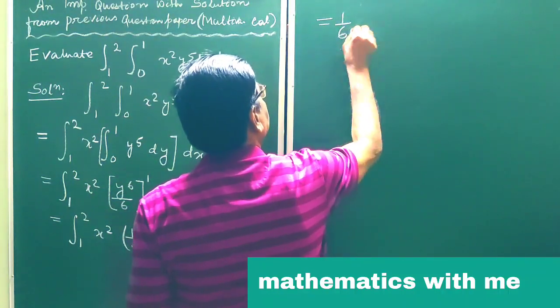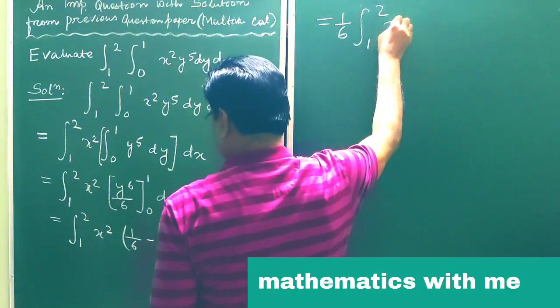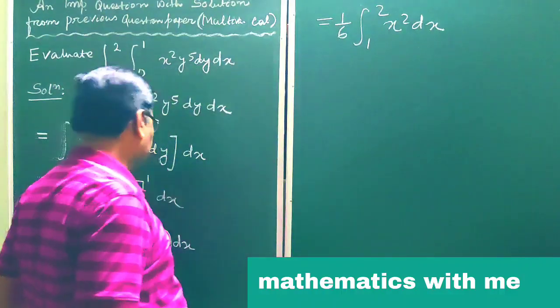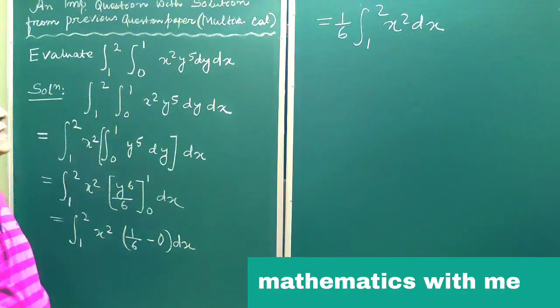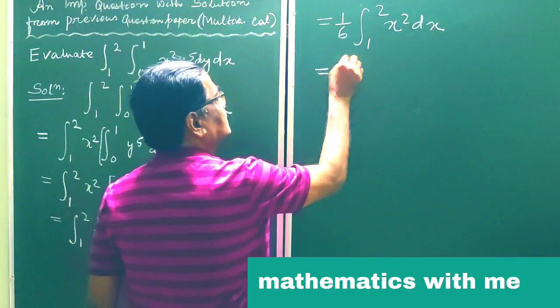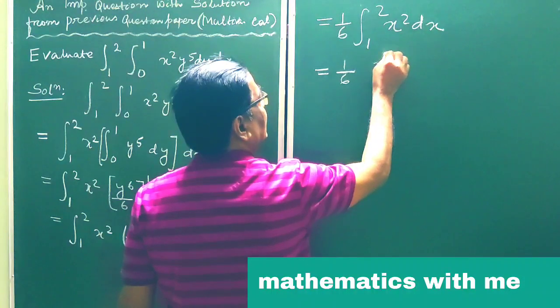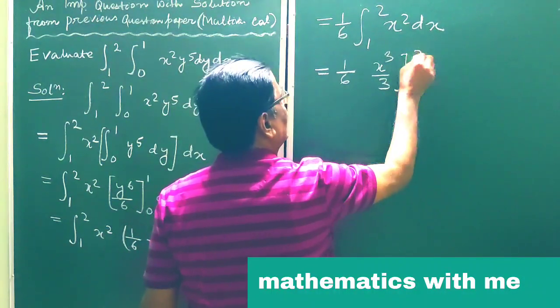This is equal to 1 by 6 integration from 1 to 2, x square dx. This is equal to 1 by 6, x cube by 3, limit is from 1 to 2.